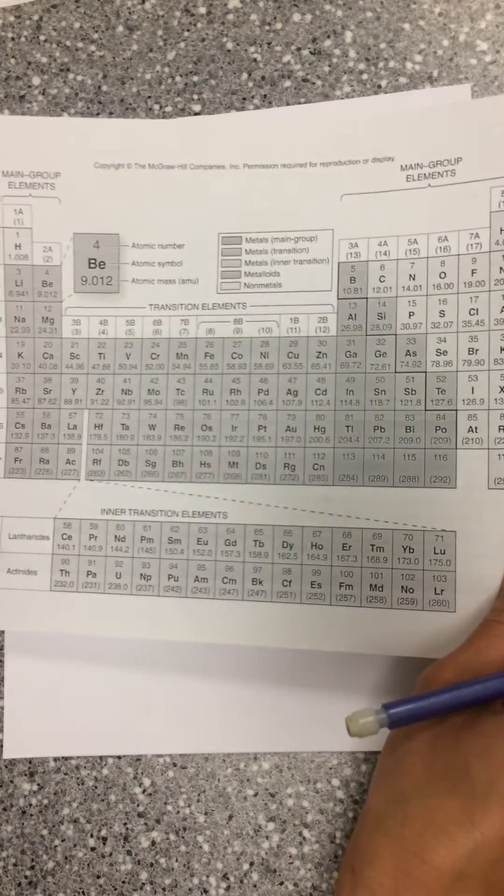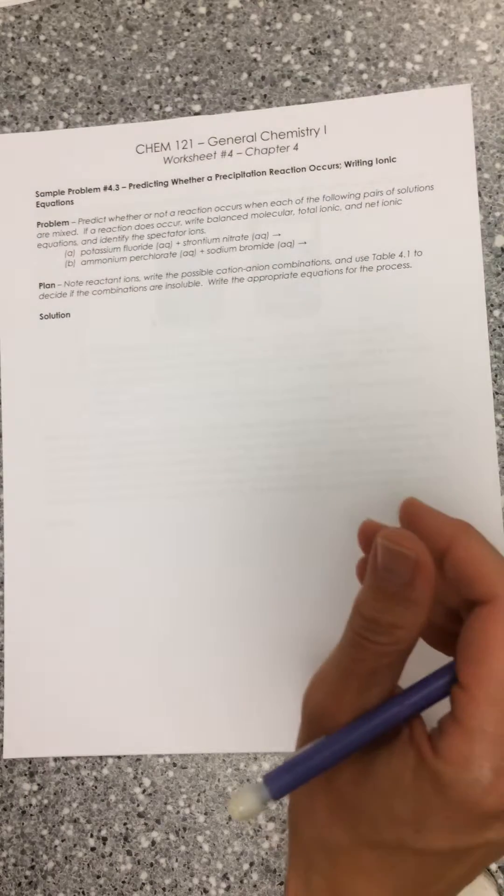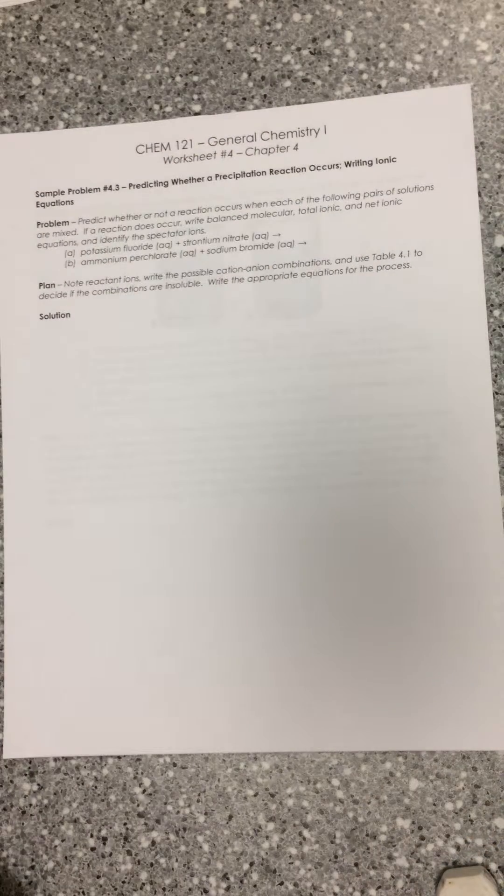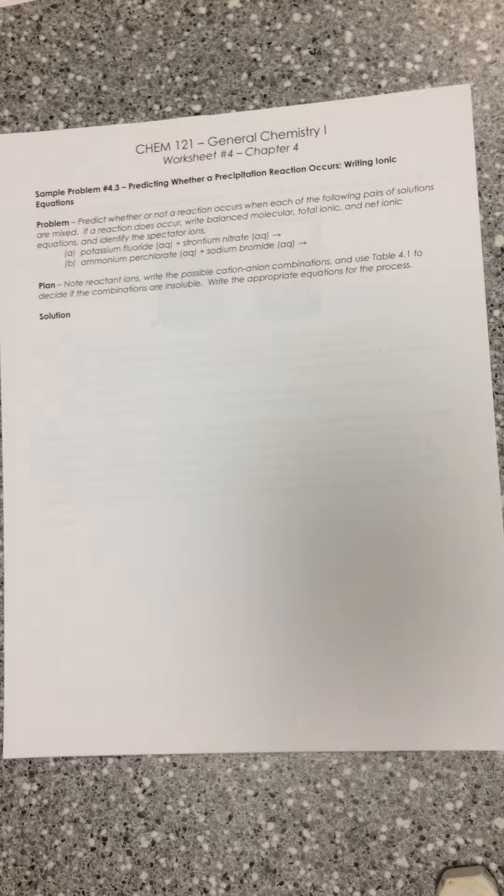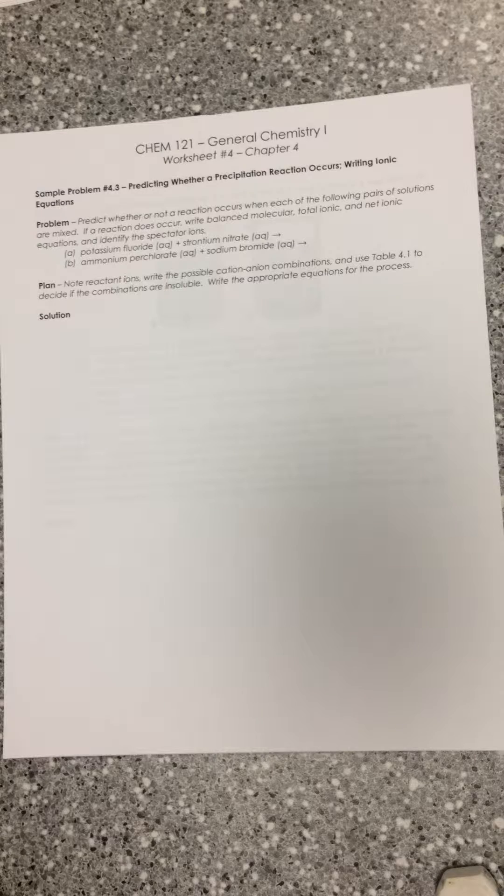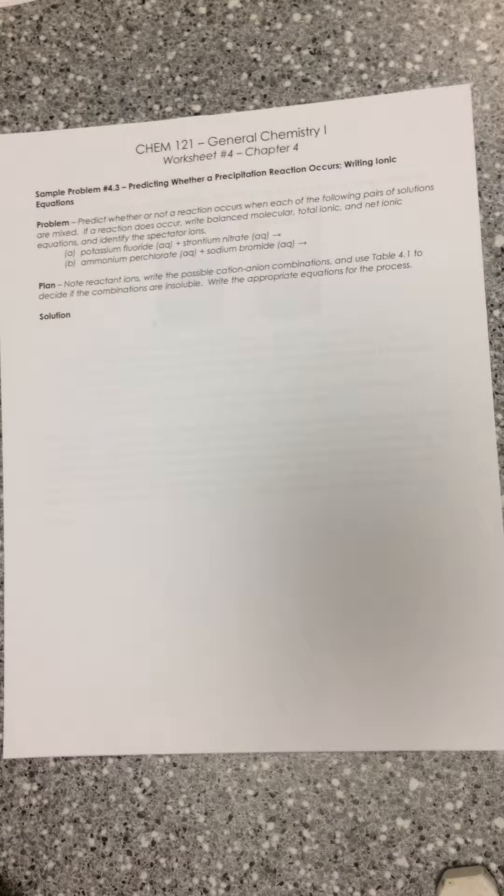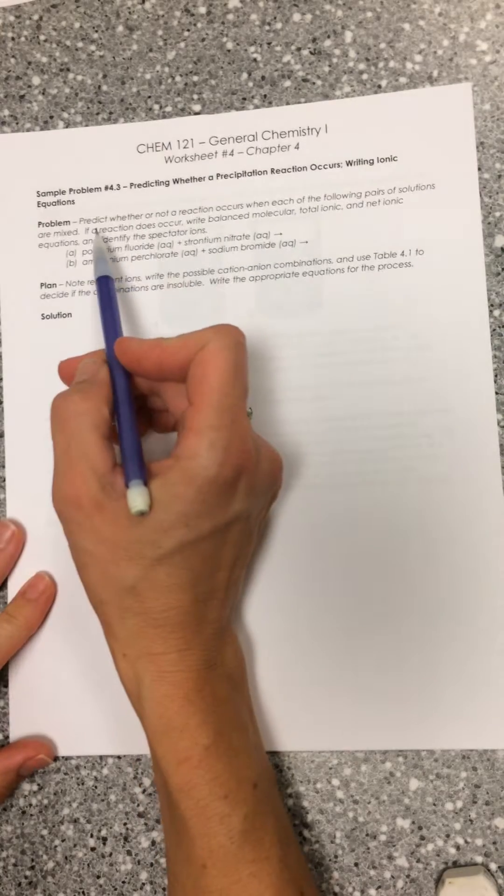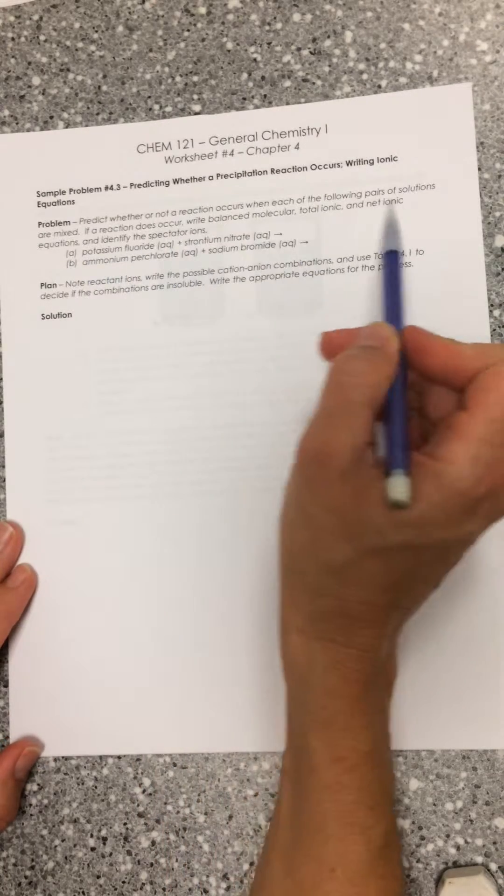We'll leave this table handy and also have a periodic table, your best cheat sheet, because some of these rules let you consider whether it's a group 2A or a halogen, and you want to make sure you can use your periodic table to reference which species those are. This question says: Predict whether or not a reaction occurs when each of the following pairs of solutions are mixed.